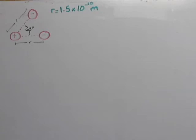This is problem 37 from chapter 21. You have two electrons that are 1.5 times 10 to the negative 10 meters from a proton. You're asked to find the magnitude and direction of the net electric force they will exert on the proton.